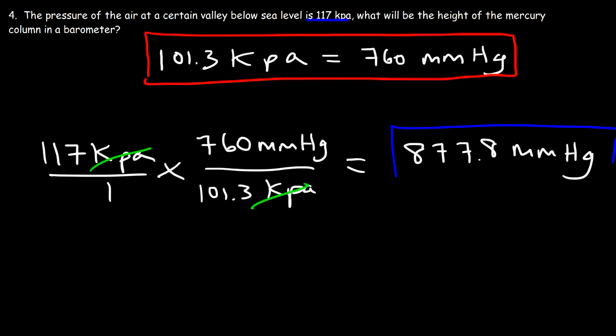Below sea level, the pressure is going to be higher than the pressure at sea level. As the elevation decreases, the pressure will increase. But if you go on top of a mountain where the elevation is higher, the pressure will be lower.